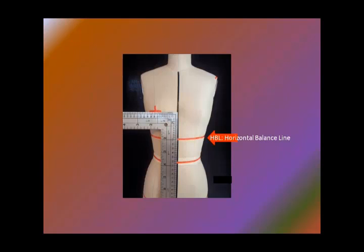This will occur between the bust points, between the bust and waist as noted by the tape line under the bust and above the waist. This is called a horizontal balance line.